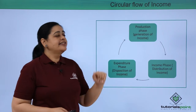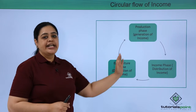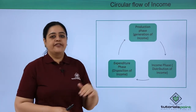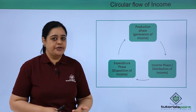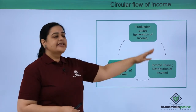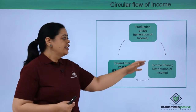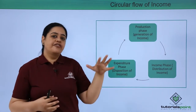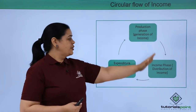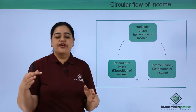Let's quickly understand the circular flow of income. What happens here is this is a never-ending cycle which keeps on happening in an economy. There would be a production phase wherein goods and services are produced. Then there would be generation of income — that income is being given to the households, that is the factors of production. People like you and me who are working in factories and offices would get that income. So from the production phase, we move to the income phase wherein the distribution of income happens.